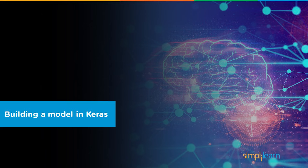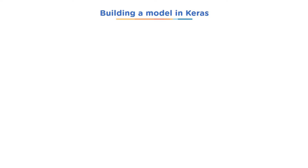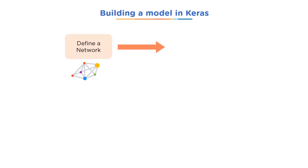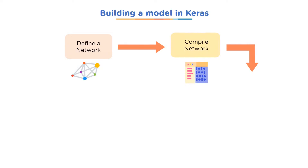Let's look at the basic pipeline for building a model in Keras. First, you define a neural network by selecting the activation functions, mathematical operations, and weightages. Next, you compile your network using Keras, which essentially builds it.